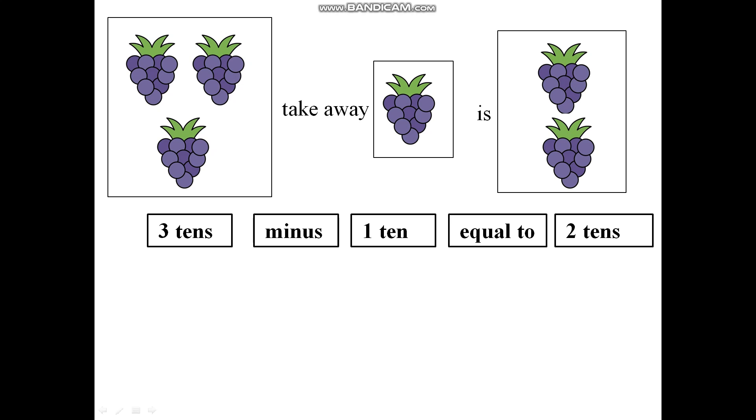three tens. Now, take away means minus one ten because this one group has ten grapes. Equal to two tens. Because they are two groups of ten each.